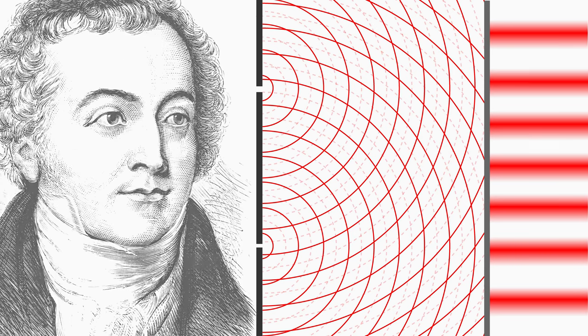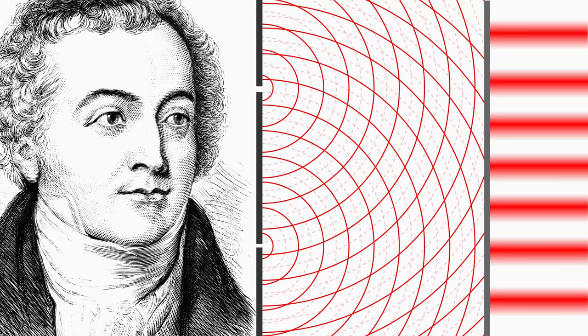In this way Mr. Young has demonstrated with his double slit experiment that light shows interference, which clearly indicates the wave character of light.